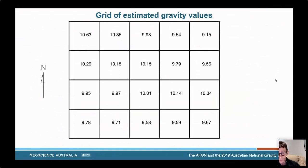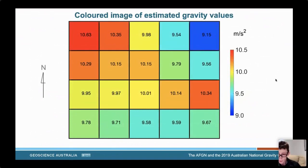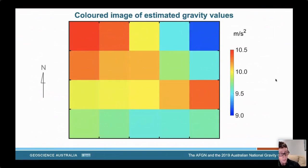The patterns in a grid of that size don't make much sense when presented as numbers. They make much more sense if we assign colours to different gravity values. Pictures like this are called images. When there are many, many cells, you can't see the individual squares and it looks like a continuous picture. I'll always use shades of red and orange and yellow to indicate where gravity is stronger, shades of green where it's normal, and shades of cyan and blue where gravity is weaker.